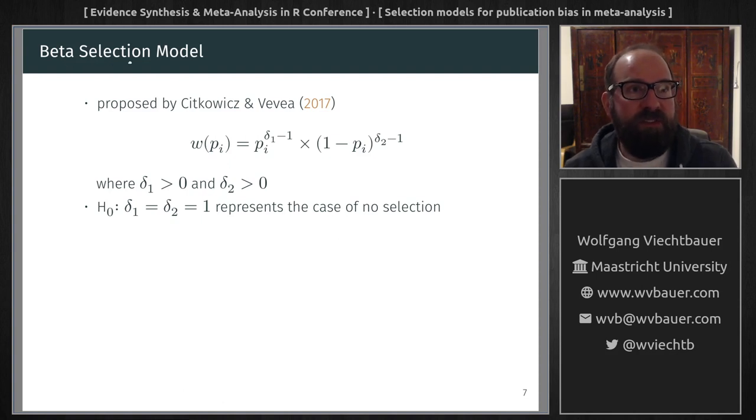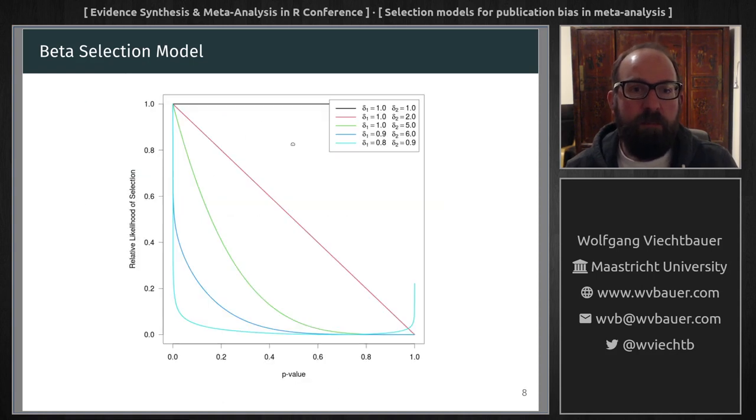Now, one model of this type is the beta selection model by Sitkovic and Vevea. And this is what the selection function looks like, but it may be easier just to look at a picture of what that function can look like. So here, for example, if both parameters of this function are equal to one, then the selection function is flat. So here, there is no association between the p-value of the study and its relative likelihood of selection. But for other combinations of these parameters, we see how the likelihood of selection is quite high for highly significant studies, at least statistically speaking, much lower for studies where the p-value is higher.